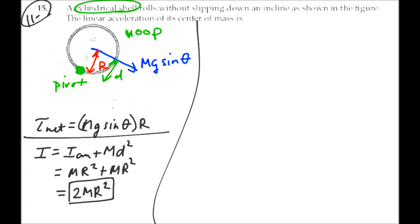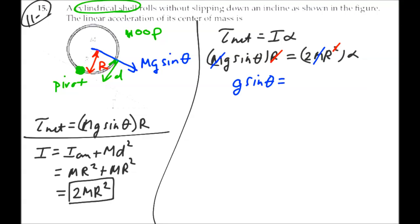Well, it should be true that the net torque is equal to the moment of inertia times the angular acceleration. So we have that mg sine theta times r is equal to this moment of inertia, 2mr squared times the angular acceleration. Well, the masses cancel out on both sides, and one of the r's cancel out on both sides. And we are left with g sine theta is equal to 2 times r times alpha.